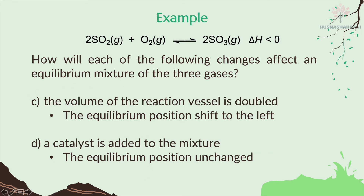C: The volume of the reaction vessel is doubled, meaning you increase the volume. Increasing the volume means pressure decreases. When pressure decreases, there is less collision between the molecules, so you need more collisions — meaning you need a greater number of moles of molecules. The total number of moles on the left is three, and on the right is two. So the equilibrium shifts to the left to increase the number of moles and restore the pressure.